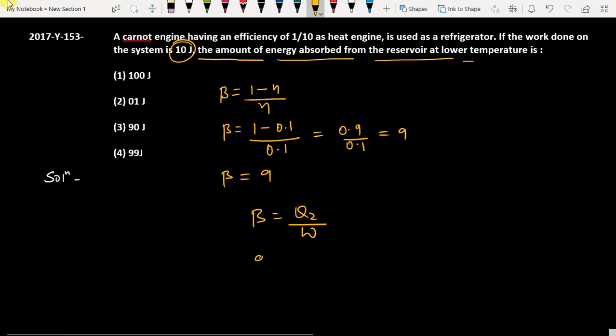So 9 equals q2 by 10, which means q2, the energy absorbed, is going to be 90 joule. This is the correct answer. Let's check which option is correct. Option 3 is the correct one. Thank you.